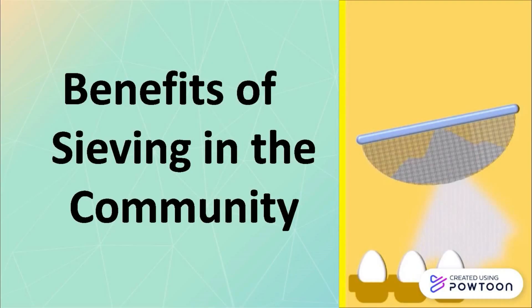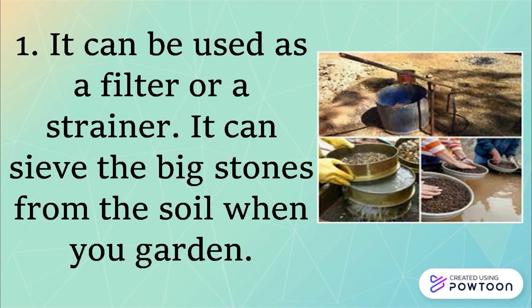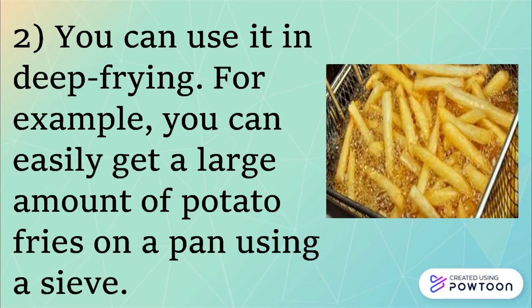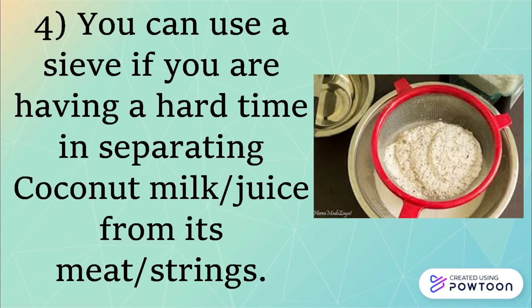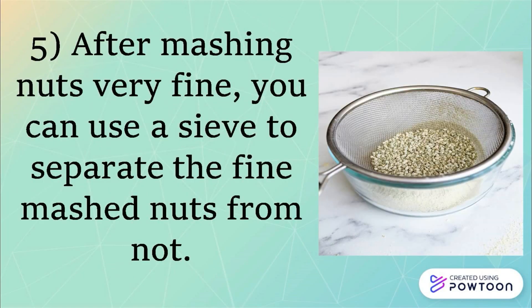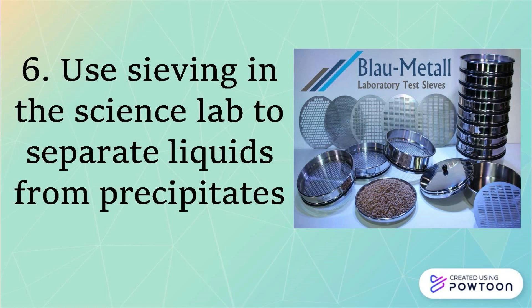Benefits of sieving in the community. It can be used as a filter or a strainer. It can sieve big stones from the soil when you garden. You can use it in deep frying — for example, you can easily get a large amount of potato fries from a pan using a sieve. You can use a sieve to separate or remove water from pasta or noodles, or to separate coconut milk from its meat. After mashing nuts, you can sieve the fine mash from the larger pieces.